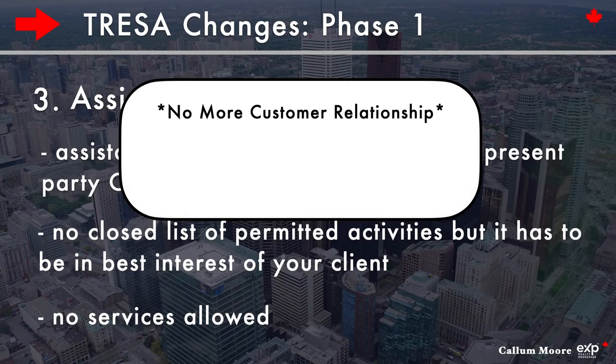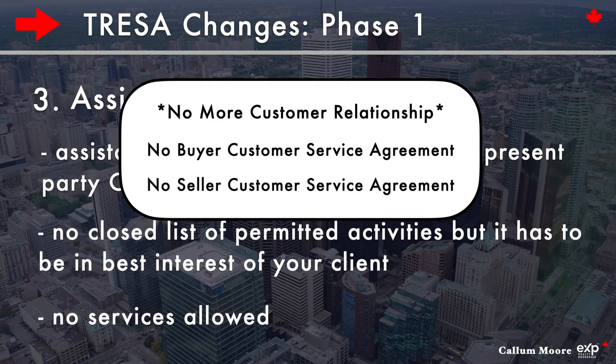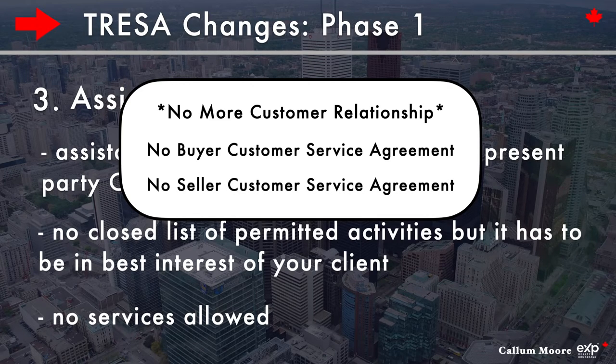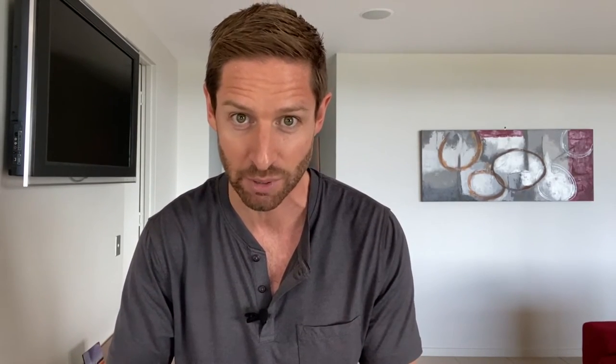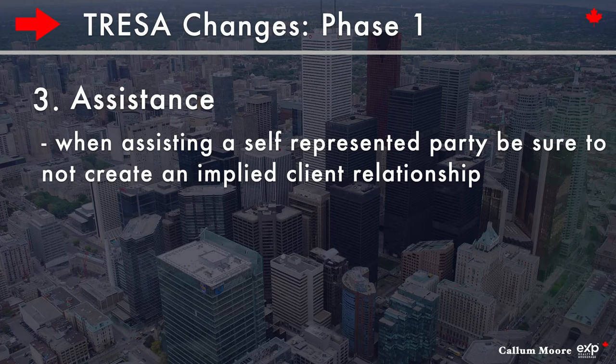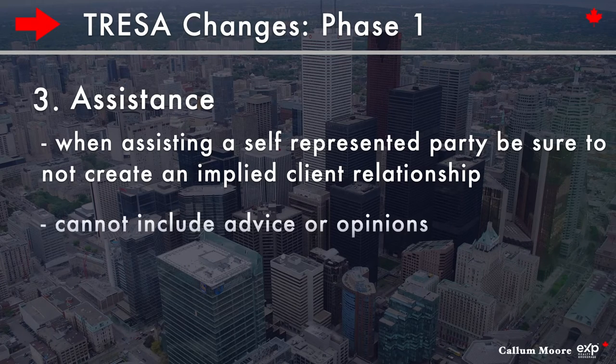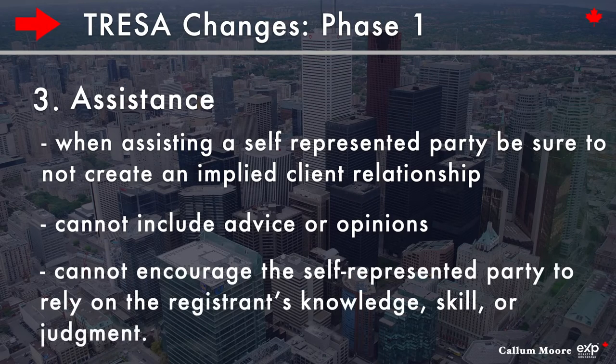They would have to become a client of the brokerage to receive that service. There is no more customer relationship — no customer service agreements, no buyer customer service agreement, no seller customer service agreement. That is completely gone, replaced by this. Now when assisting a self-represented party, we have to be sure not to create an implied client relationship. You cannot include advice or opinions and cannot encourage the self-represented party to rely on the registrant's knowledge, skill, or judgment.